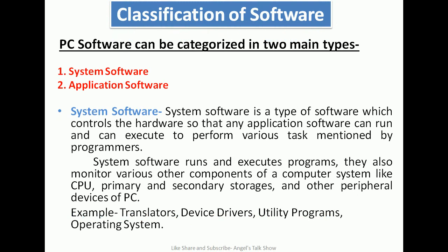Now, the classification of software. PC software can be categorized into two main types: first is system software and second is application software. System software is a type of software which controls the hardware so that any application software can run and execute to perform various tasks. System software runs and executes programs and also monitors various components of the computer system like CPU, primary and secondary storage, and other peripheral devices. Examples of system software are translators, device drivers, utility programs, and operating system.